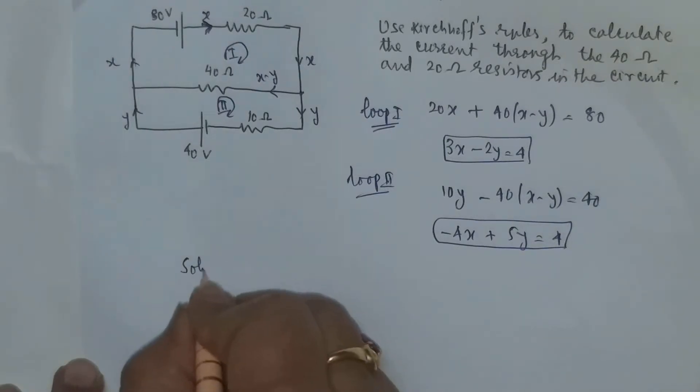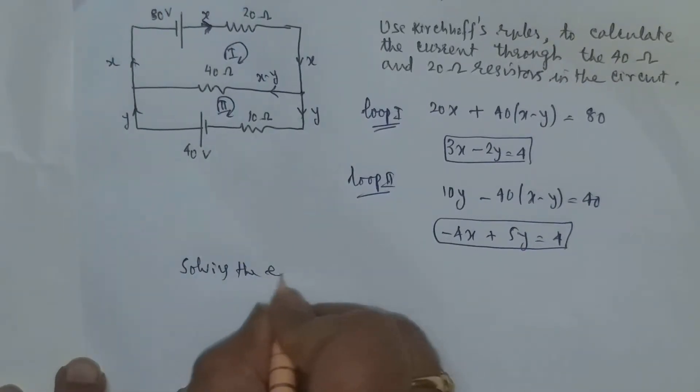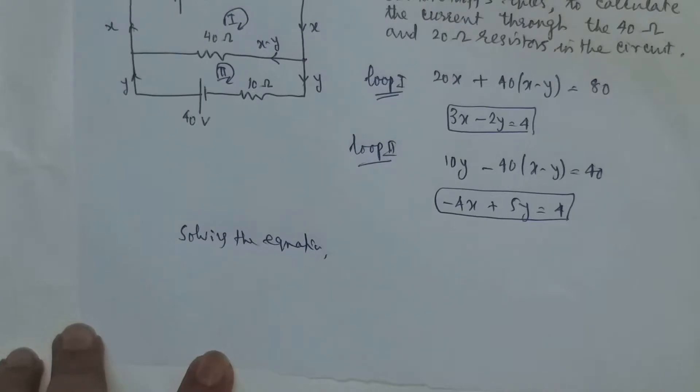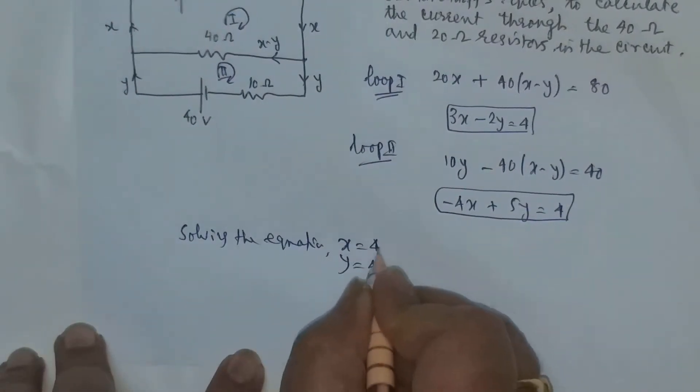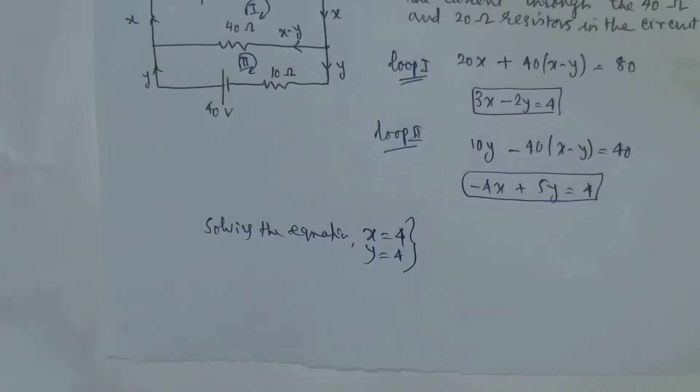Solving this is solving the equations, simultaneous equations. You may verify: x equal to 4 and y is also equal to 4. So what's our answer?